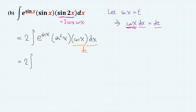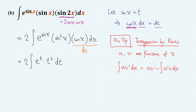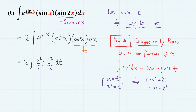And this is another integration by parts example, this time slightly more complicated. First, we let t squared as u and e to the t as v prime, which gives u prime equals 2t and v equals e to the power of t. This gives 2 times uv — so t squared e to the power of t — minus the integral of u prime v, which is 2t e to the power of t dt.